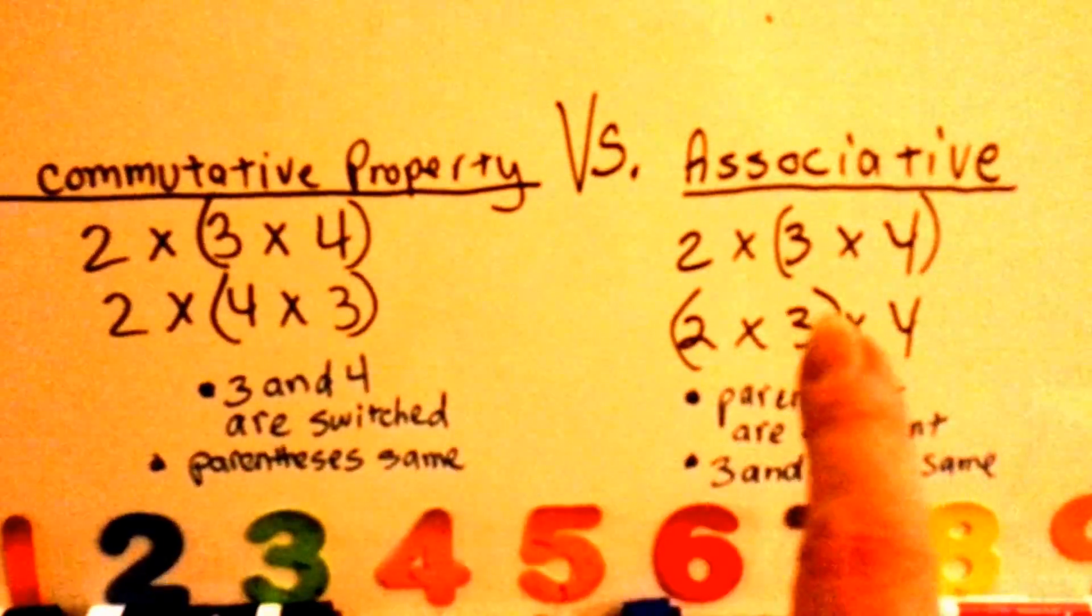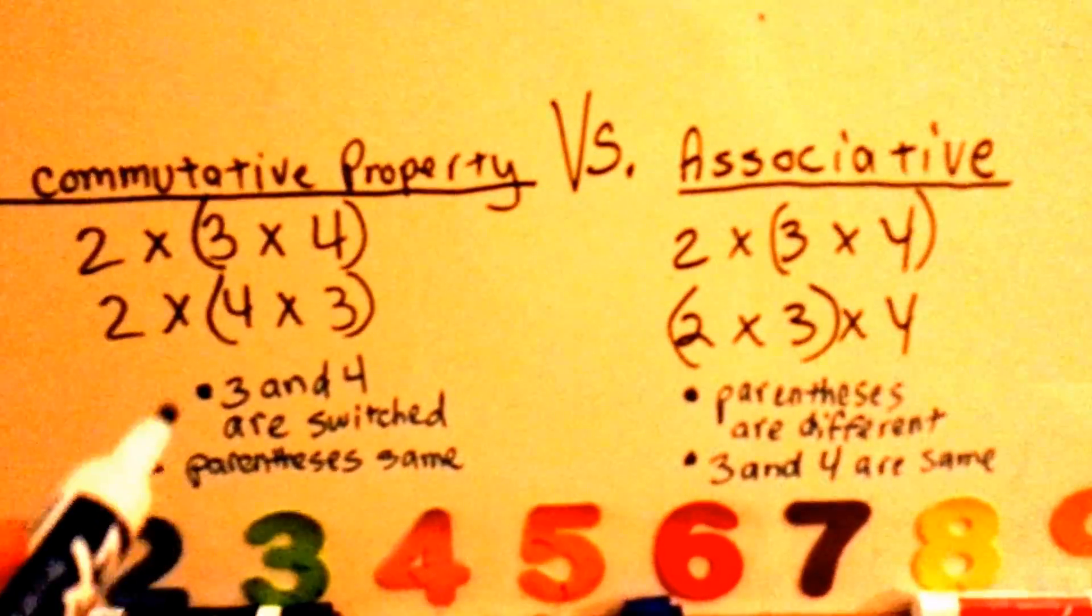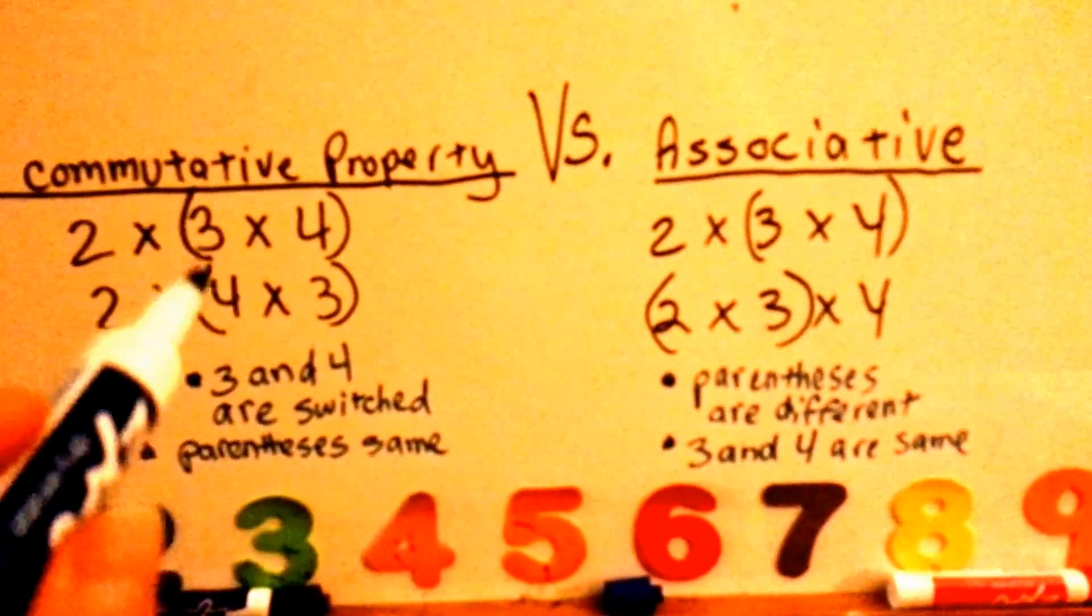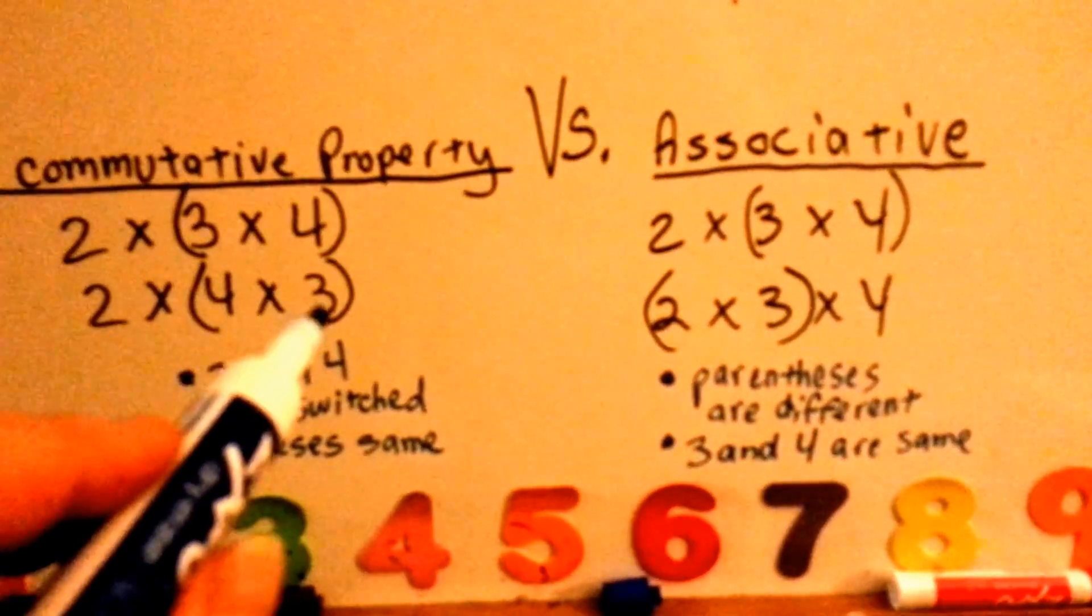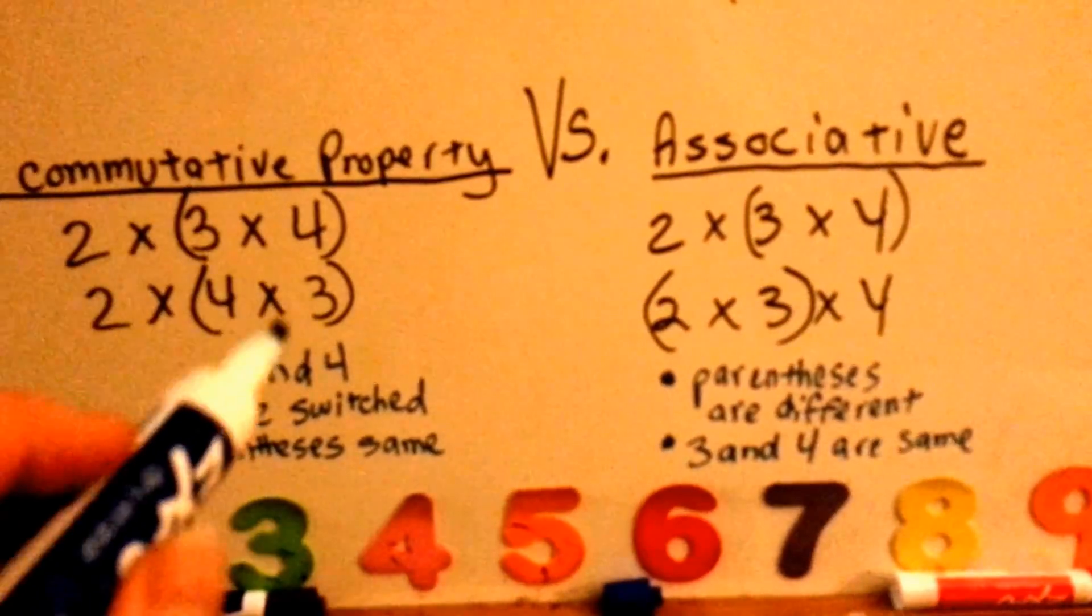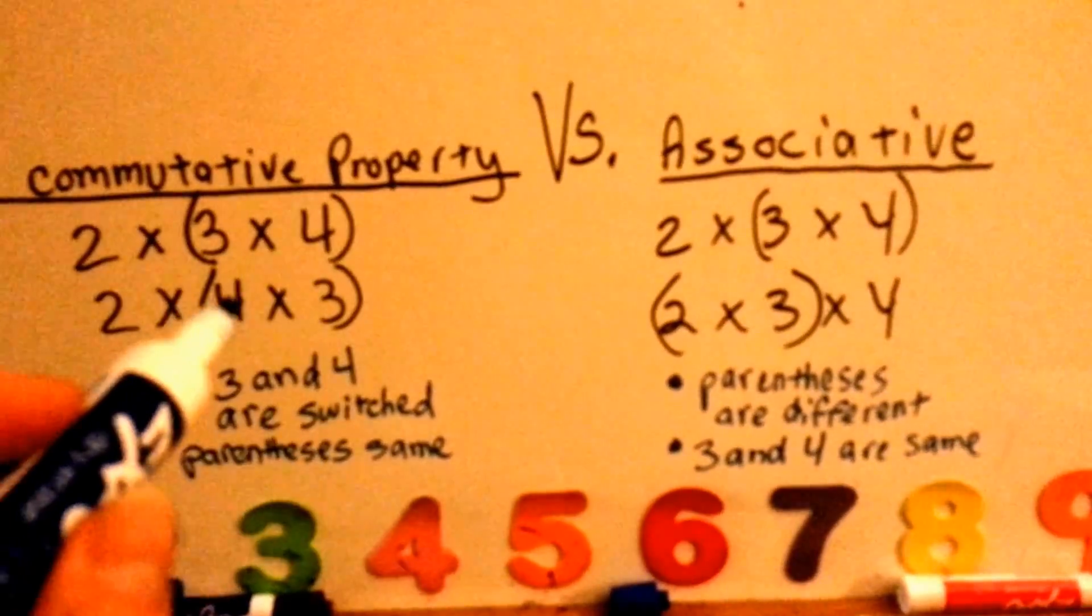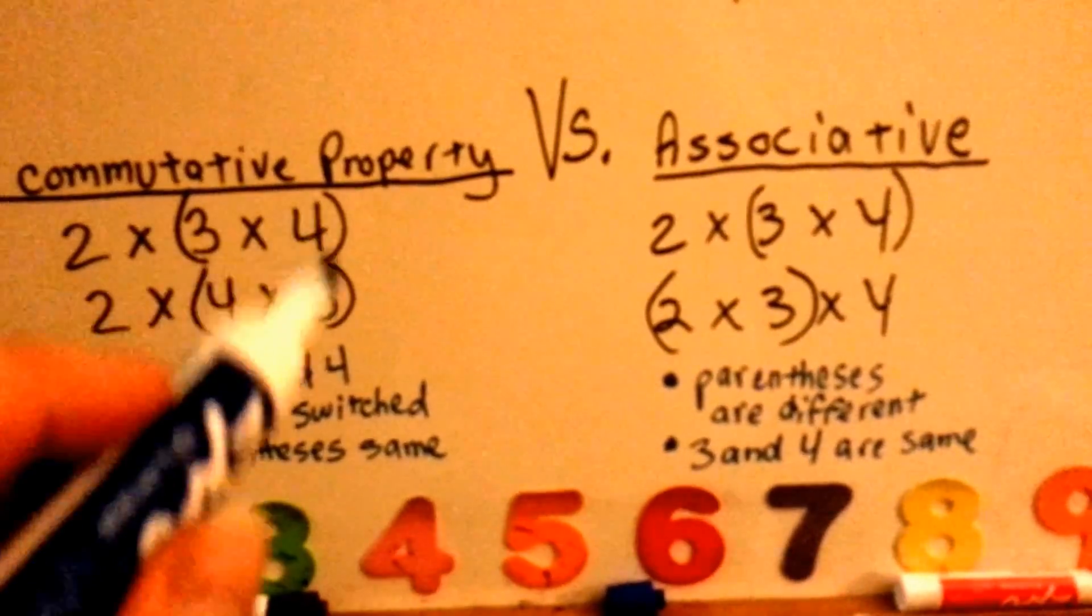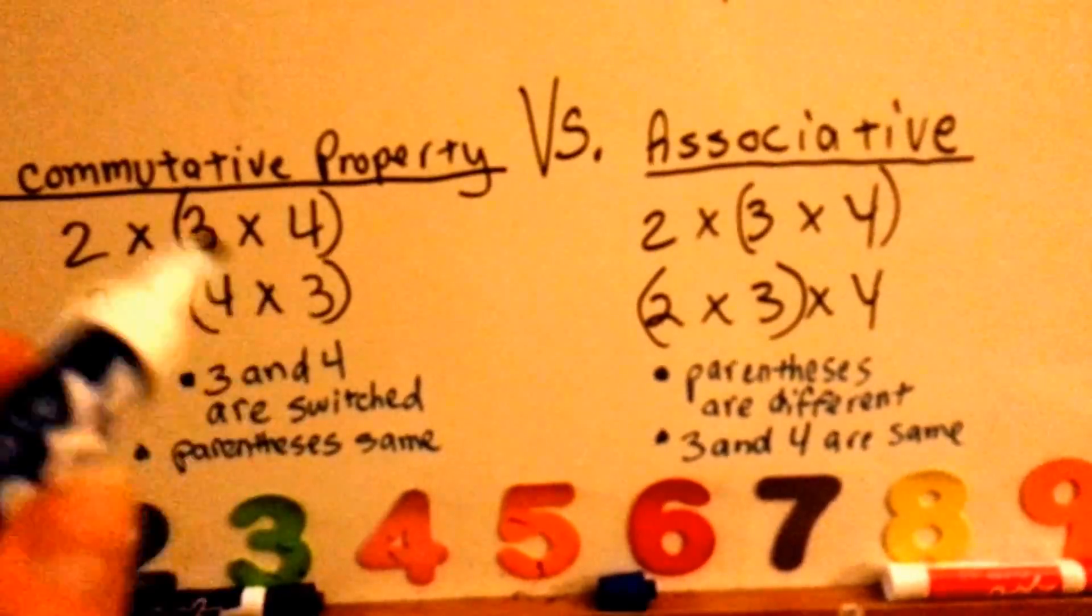Can you look at this side and see what's different than over here? The three and the four are switched. The three is first and then a four. In this one, the four is first and then the three. That's commutative. It's saying it doesn't matter if you go backwards or forwards, it's the same. But see how the parentheses are in the same spot. They're still on the last two.